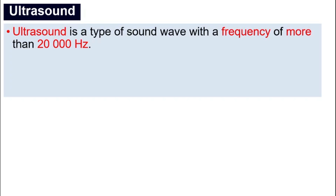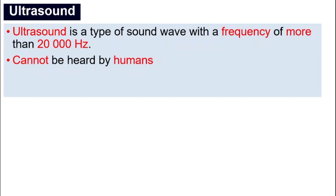Ultrasound. What is ultrasound? Ultrasound is a type of sound wave that has a high frequency — a frequency of more than 20,000 hertz. You have to remember this number, 20,000 hertz. Why? Because that is the limit of our human hearing. Anything above 20,000 hertz we cannot hear, which means we cannot hear ultrasound.